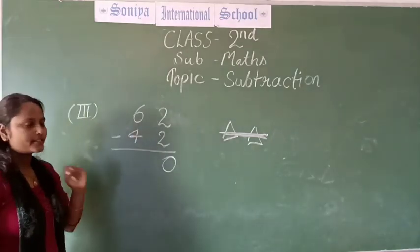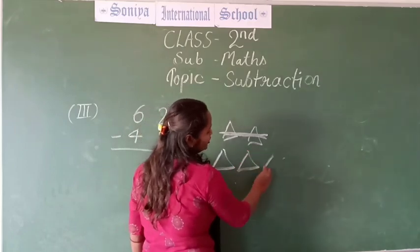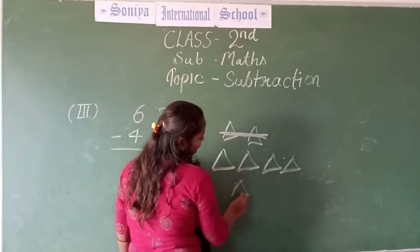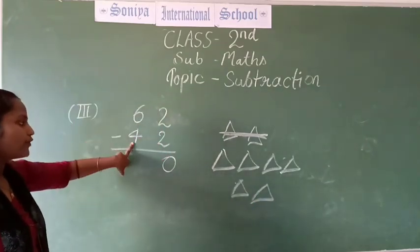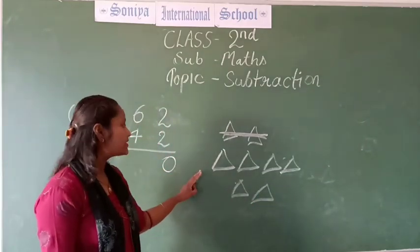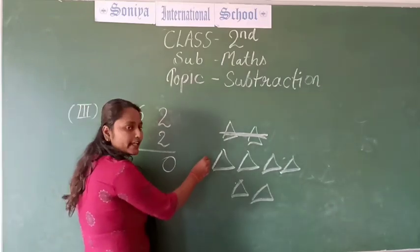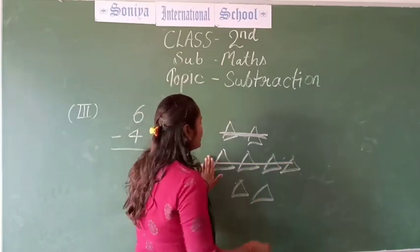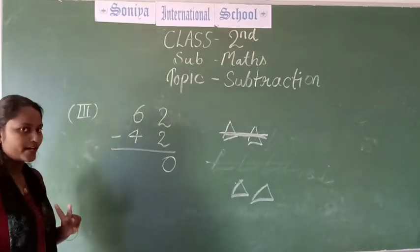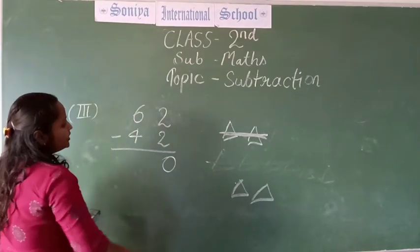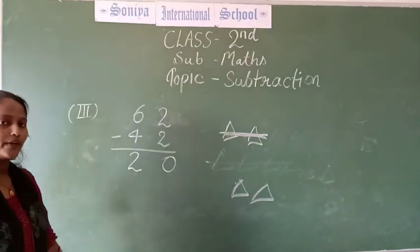Now we will see here. This is 6, so we are making 6 triangles: 1, 2, 3, 4, 5 and 6. This is 6 and this is 4. So we are taking away 4 triangles. If these 4 triangles are removed, how many triangles are left? 2 triangles. So we are writing 2. 62 minus 42 means 20.